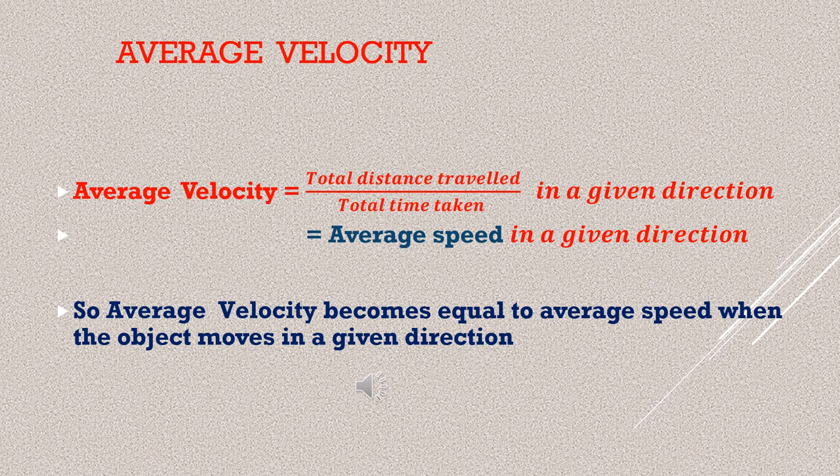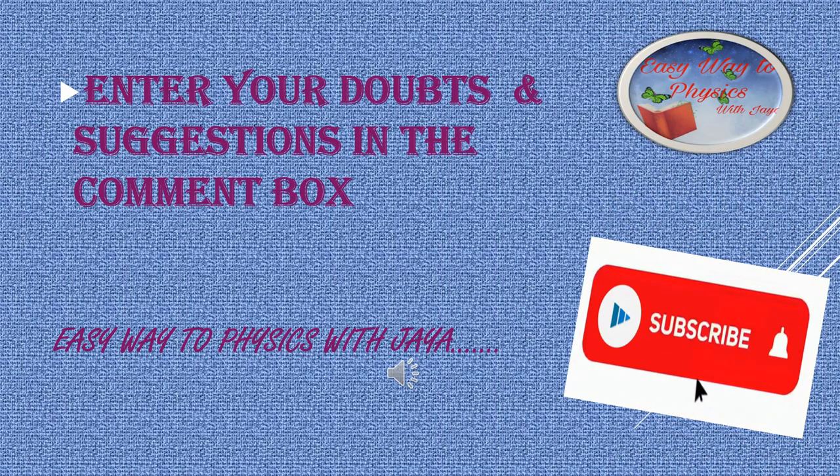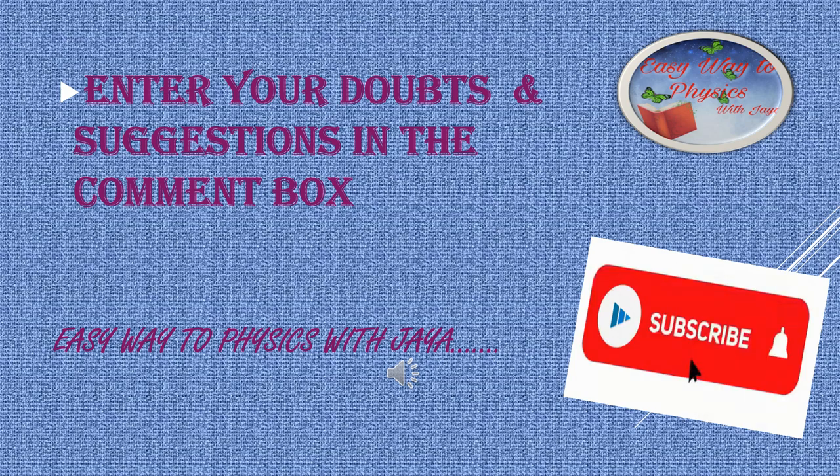Average velocity is calculated the same way as average speed — total distance traveled divided by total time taken — but in a given direction, which must also be mentioned. Average velocity equals average speed when the object moves in a given direction without changing it. For example, a car moving on a straight road with the same speed has equal average velocity and average speed. Hope you understood the topic well. Please enter your doubts and suggestions in the comment box, and don't forget to subscribe the channel. Thank you.